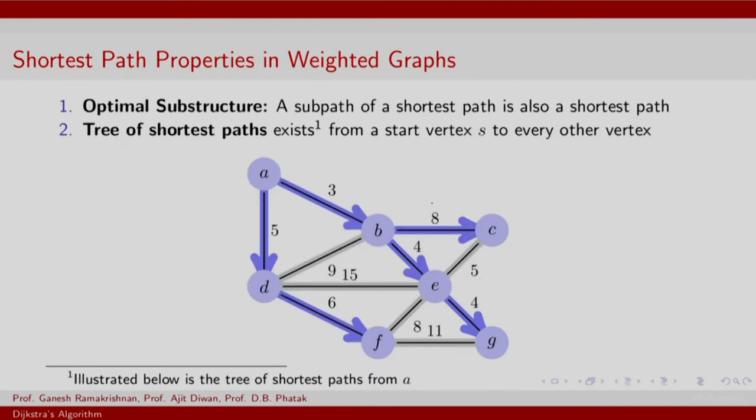Two specific properties that we would like to exploit are as follows. Optimal substructure. Given the path between A and G, what we would like to discover is sub-paths and we like the sub-paths to also correspond to shortest paths. The sub-path of a shortest path is also a shortest path. In fact, now starting with a source node A, we can show that a tree of shortest paths exists from any start vertex S to every other vertex.